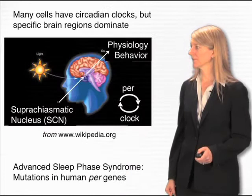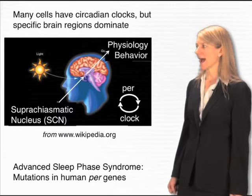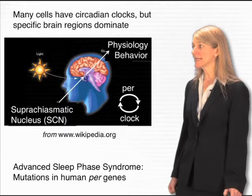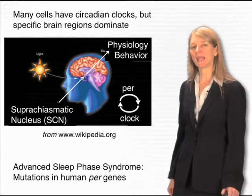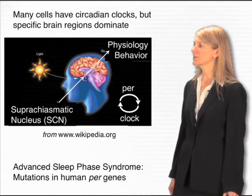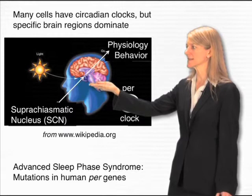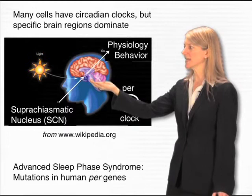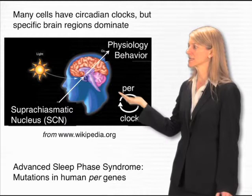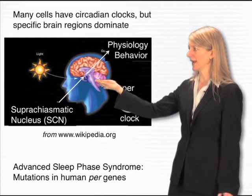How do these genes affect our behavior? Why are we active at different times? In humans, although many cells have these clock genes and have their own circadian clocks, there are specific brain regions in which these clock genes are important to dominate behavior. These brain regions are buried deep within the brain in an area called the hypothalamus, and in particular in a region called the suprachiasmatic nucleus—what you might think of as the master clock. The activity of the clock genes in the suprachiasmatic nucleus regulate the physiology and behavior of animals.